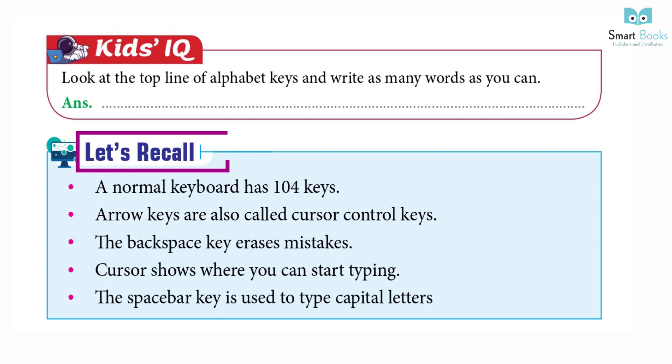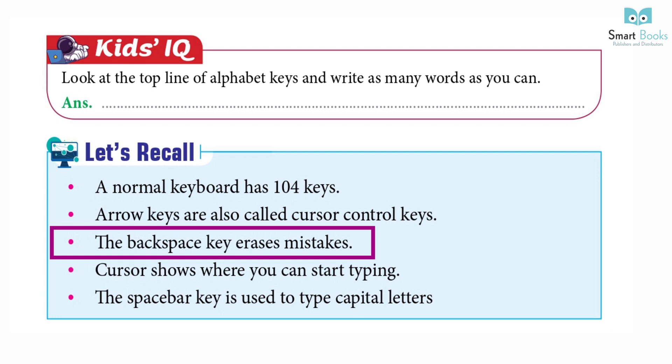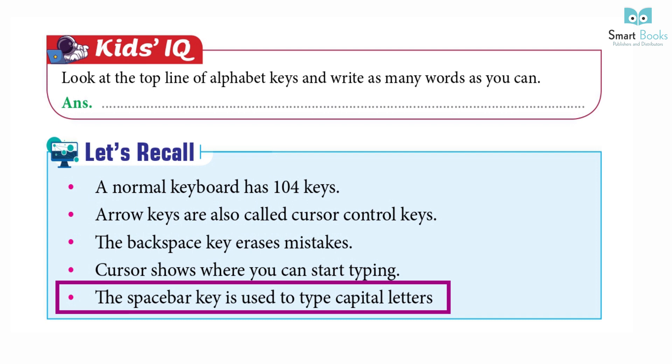Let's recall: A normal keyboard has 104 keys. Arrow keys are also called cursor control keys. The backspace key erases mistakes. Cursor shows where you can start typing. The space bar key is used to type capital letters.